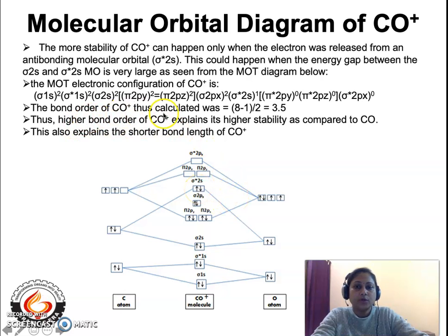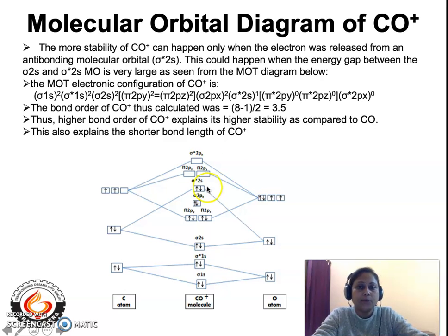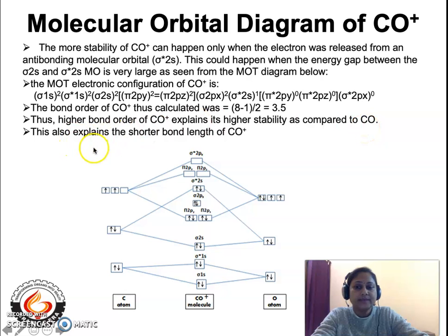Now the bond order for CO+: the valence bonding molecular orbitals have a total of 8 electrons, and one electron is released from sigma star 2s, leaving 1 anti-bonding electron. So bond order is (8 minus 1) divided by 2, giving 3.5. This explains the higher bond order of CO+ compared to CO, the higher stability of CO+, and the shorter bond length of CO+.